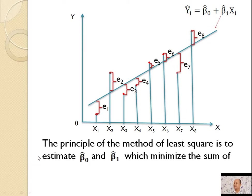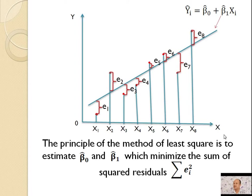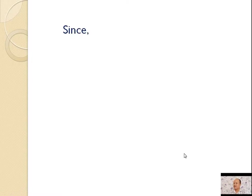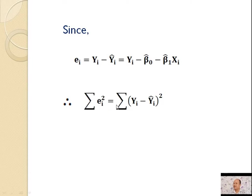So, the principle of the method of least squares is to estimate β̂₀ and β̂₁ which minimize the sum of squared residuals, Σeᵢ². Since eᵢ = yᵢ − ŷᵢ = yᵢ − β̂₀ − β̂₁xᵢ, therefore Σeᵢ² = Σ(yᵢ − ŷᵢ)² = Σ(yᵢ − β̂₀ − β̂₁xᵢ)².